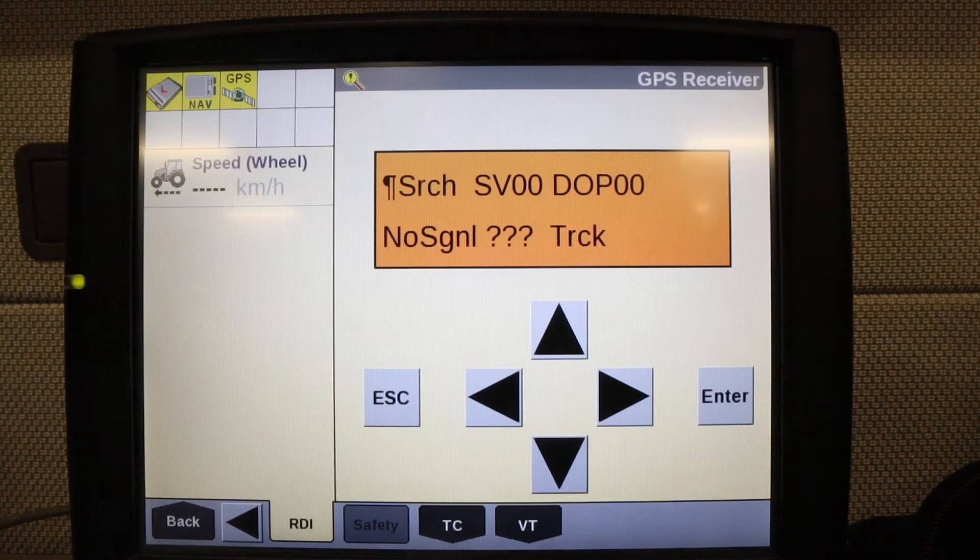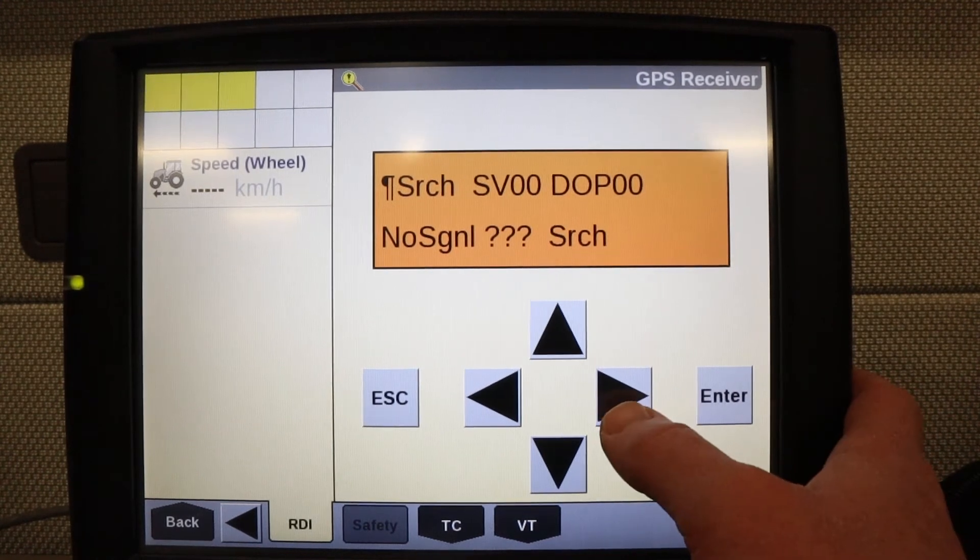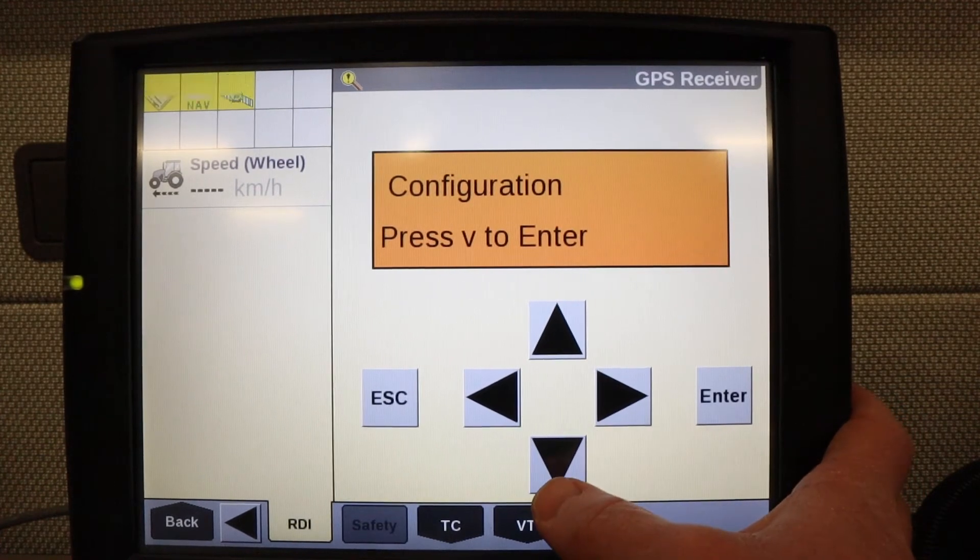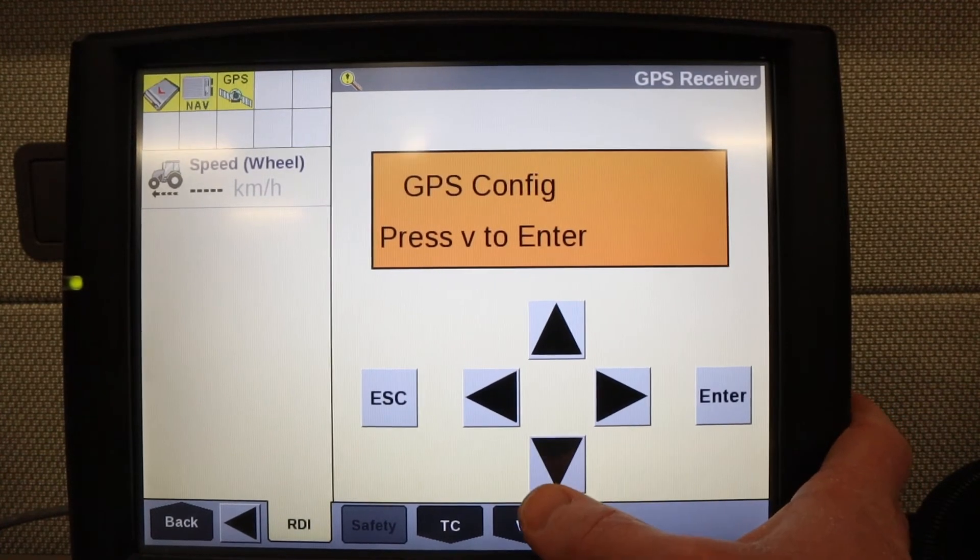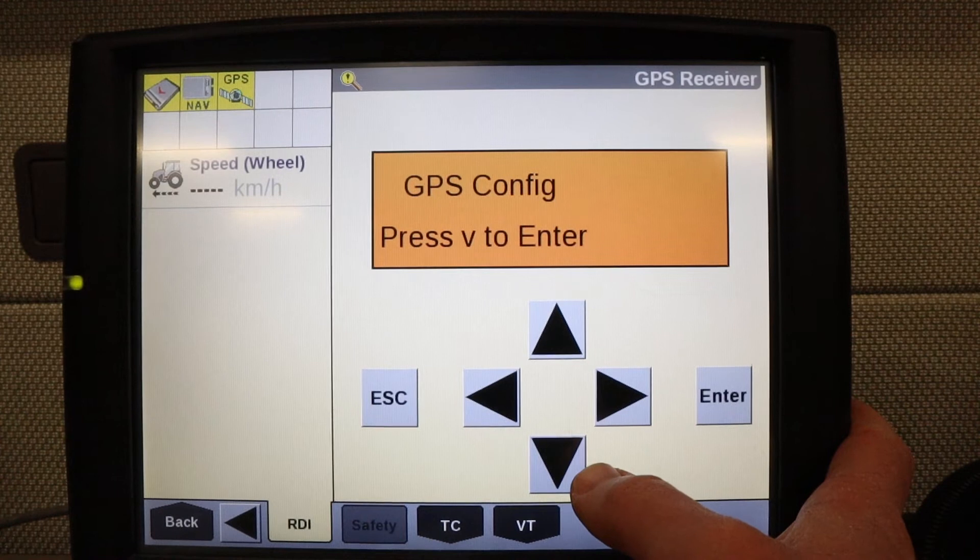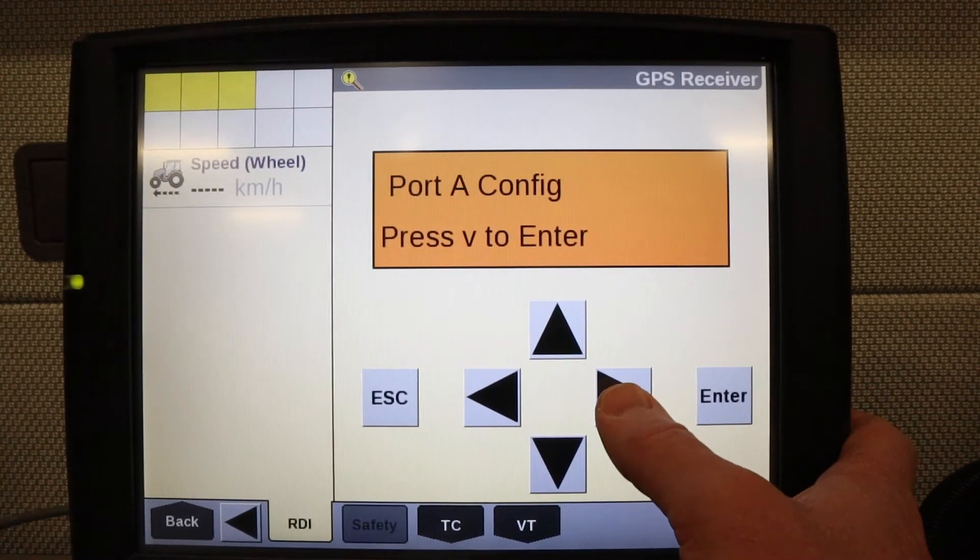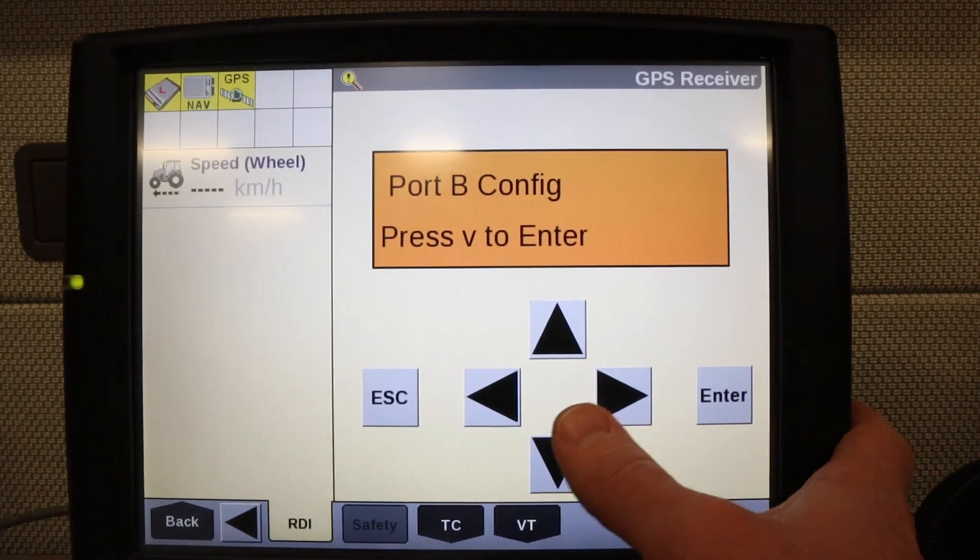Now we need to find the configuration screen. Press the right arrow until you find configuration and press down. Now you're within the configuration options, and you're going to press the right arrow until you find the port that you connected to.